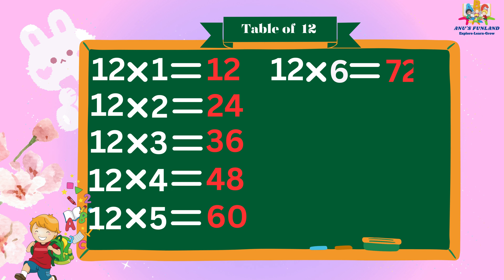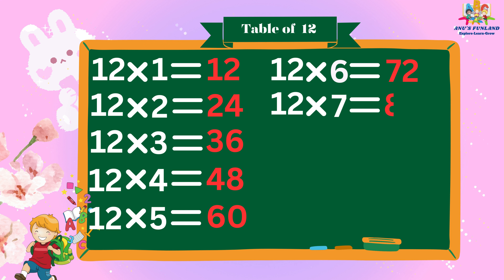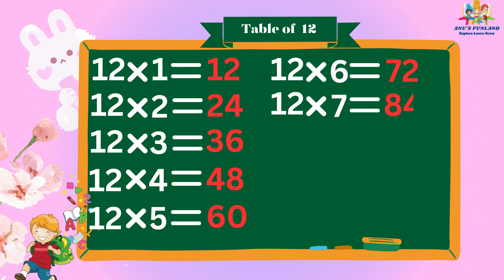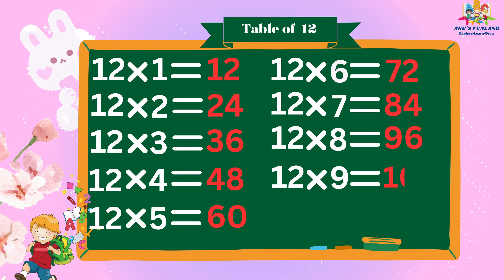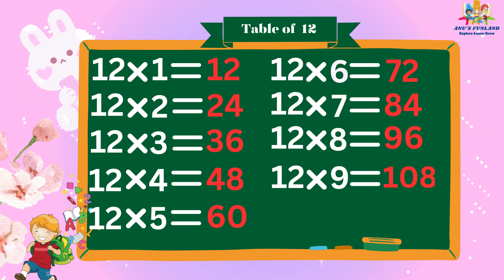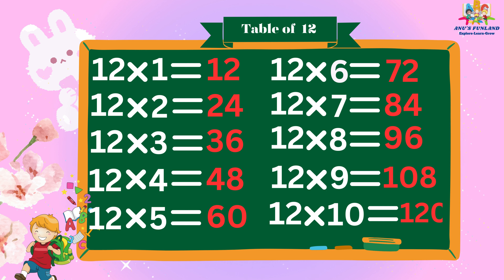Twelve sixes are seventy-two. Twelve sevens are eighty-four. Twelve eights are ninety-six. Twelve nines are one hundred eight. Twelve tens are one hundred twenty.